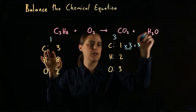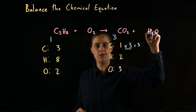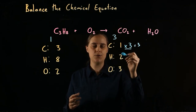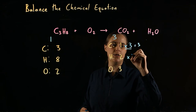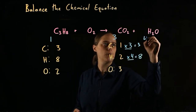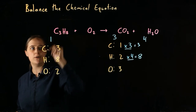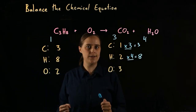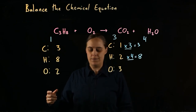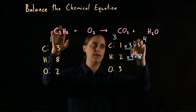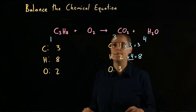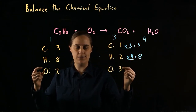Now let's go to hydrogen. Propane has eight hydrogens, water has two. Two times what equals eight? Two times four equals eight. We need four molecules of water per one molecule of propane. Now we know the ratio of carbon dioxide to water as well, which gives us a better place to balance oxygen.